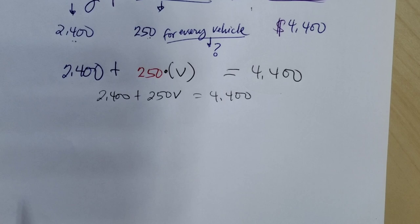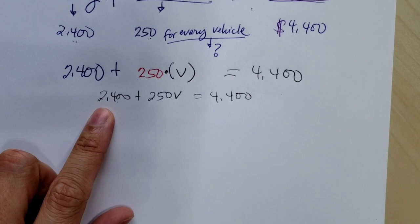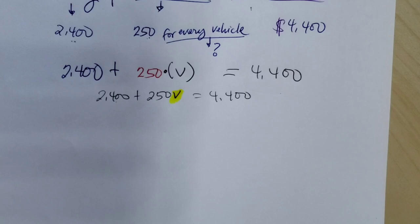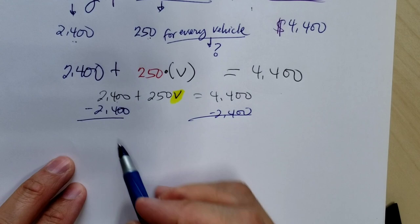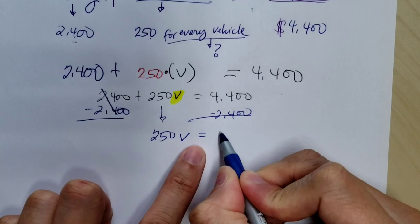On the variable side, the constant, we know the constant is 2,400. Let's get rid of this because our goal is to isolate the variable to figure out how many vehicles should he or she sell to get $4,400. So we subtract 2,400 on each side of the equation because of the property of equality. That's a zero. What's left is 250v equals 2,000.